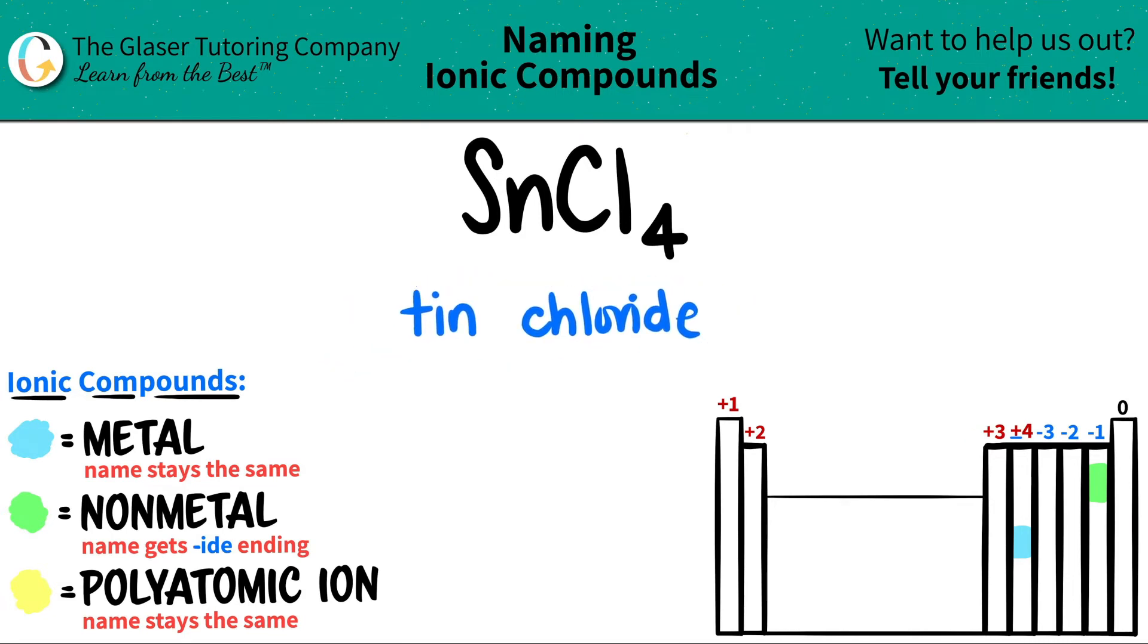Now just do a double check just to make sure that we don't need to use any Roman numerals. But here's an exception. Even though tin is not in this little block here, it is classified as like a transition metal. I believe it's a post-transitional metal. So just put a star next to this.